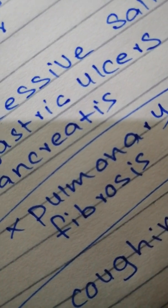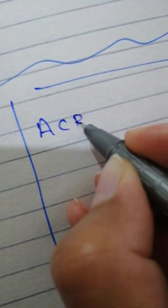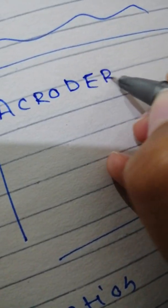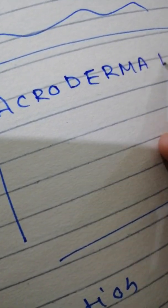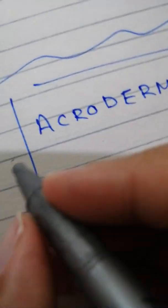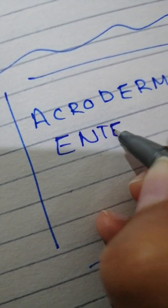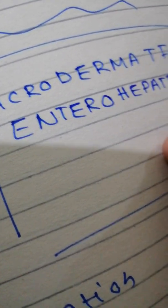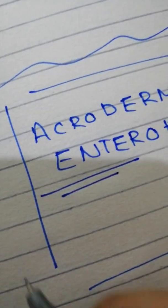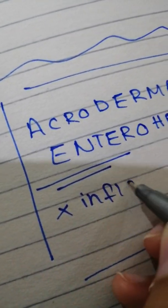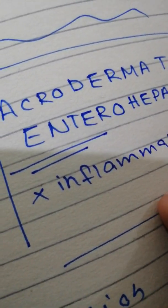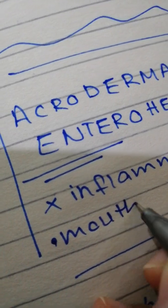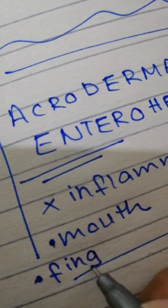There is also this zinc metabolic disorder, an inherited disorder that is acrodermatitis enteropathica. In this disorder, there is a defect in zinc absorption. What are the symptoms? There is inflammation, and where is the inflammation? The inflammation is around the mouth, the fingers, and the nose.